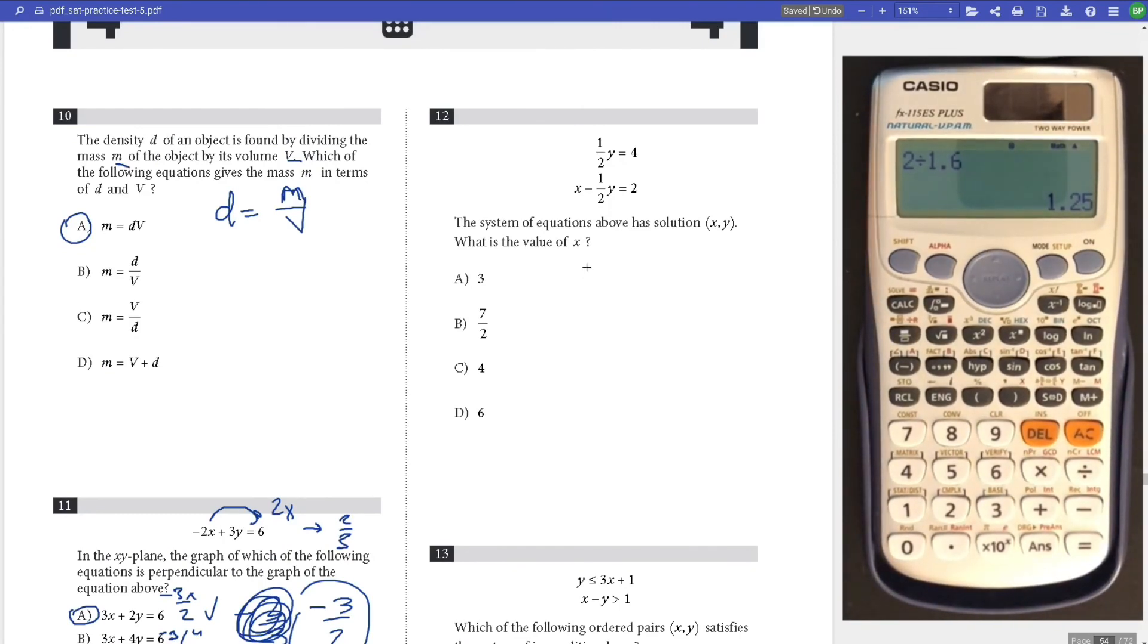Number 12, what is the value of X? This matches this. You can just plug in 4, so X minus 4 equals 2. X equals 6. Answer is D.